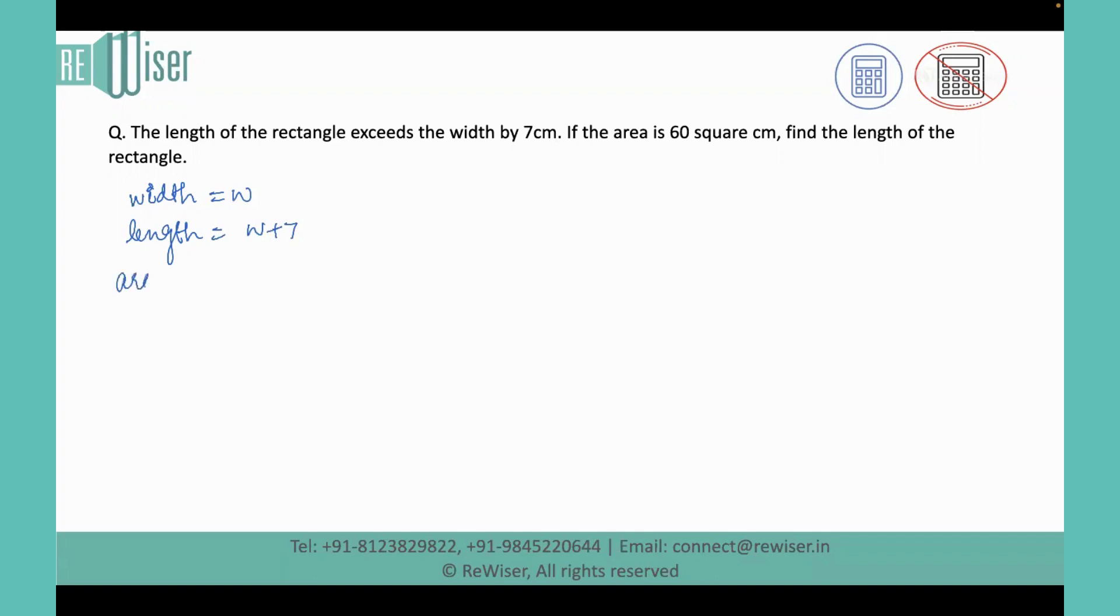So we are going to write the formula of area of a rectangle, which is length times width, which equals W plus 7 times W. And as we know that area equals 60, we get a quadratic equation: W square plus 7W minus 60 equals 0.